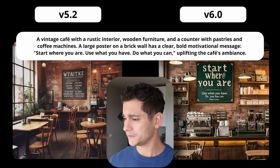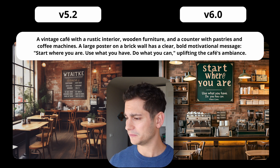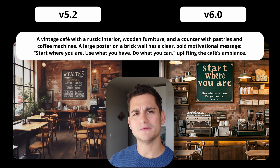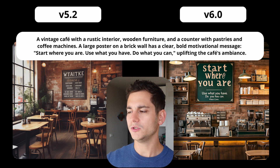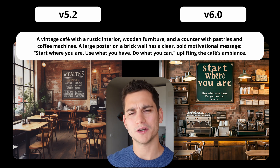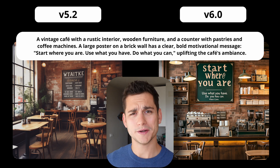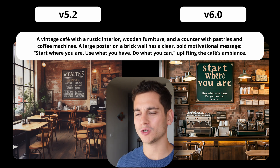Then comes one of the biggest changes for a lot of people in Midjourney. If you've used Midjourney to generate any form of text in the past, there was not a chance you'd get anything right — it would always come up with random text. If you wanted to say hello, it would say GXY25. We put this to the test with a vintage café prompt with rustic interior, wooden tables, pastries, coffee machines, exposed brick walls. If you want to add text to an image in Midjourney, you wrap it in double quotes. The text we wanted was 'start where you are, use what you have, do what you can.' Version 5.2 is complete gibberish, but in version 6 we have 'start where you are, use what you have, do what you can' — almost perfect. The advancement is incredible.